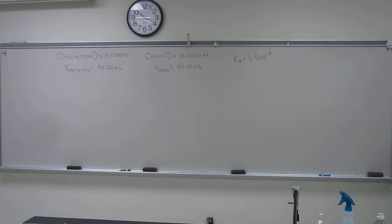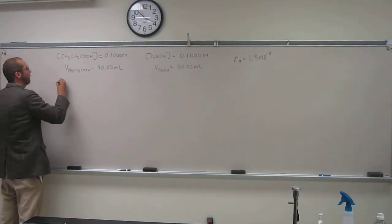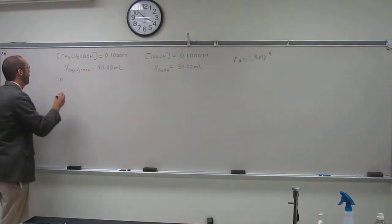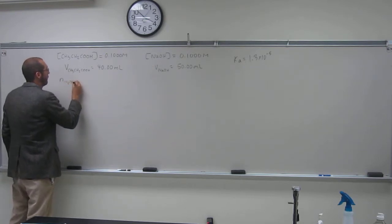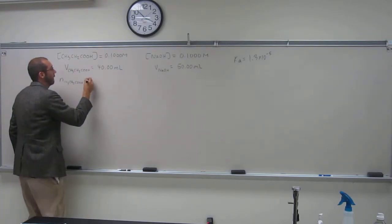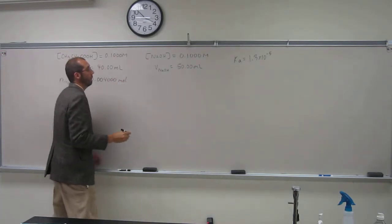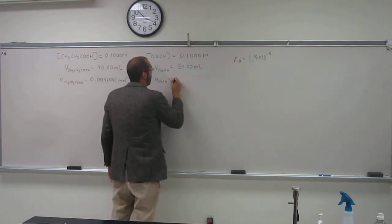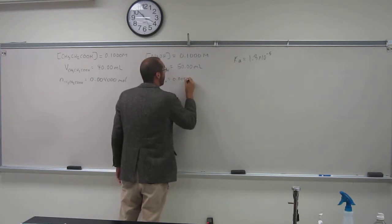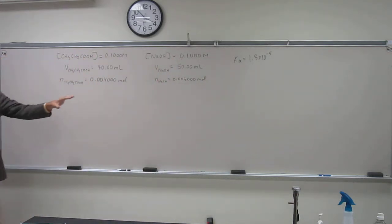Okay, so from these volumes and concentrations we should be able to get the number of moles. So if you remember from our last few calculations, the number of moles of the propanoic acid here is going to equal 0.004 moles, and then this one of NaOH, 0.00500 moles. Okay, so remember what I was saying: you want to compare moles to moles on all of these.